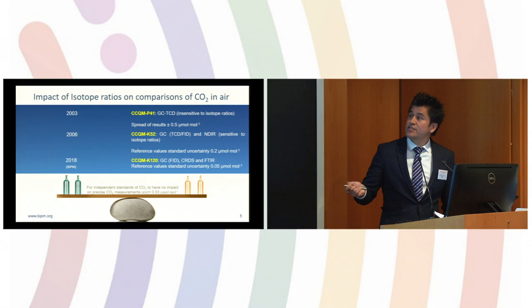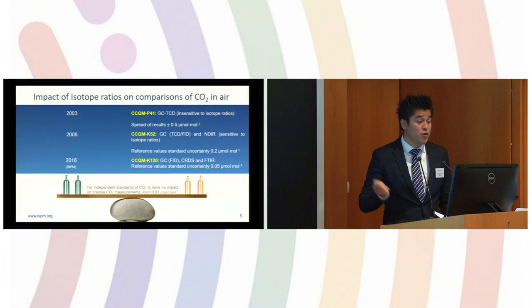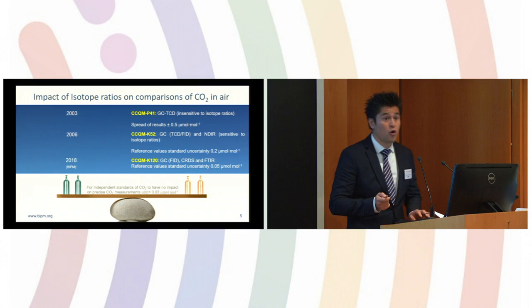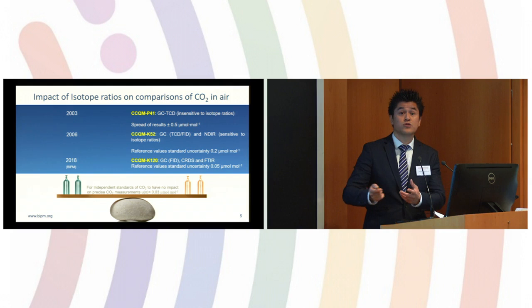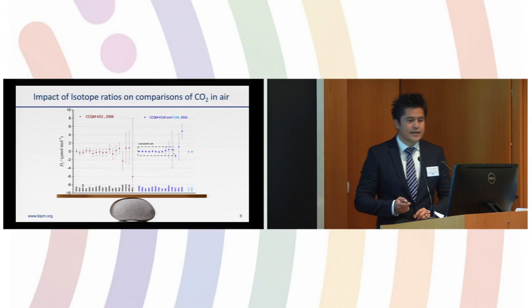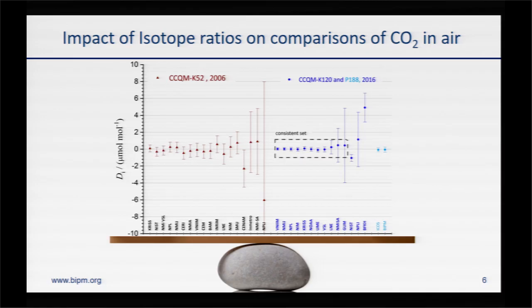This is important to remark because for independent standards of CO2 to have no impact on precise CO2 measurements, we need to have an uncertainty of 0.03 micromole per mole. Then the global networks will only have the contribution of uncertainty of the system itself and not of the standards they are using. We were very happy to be able to demonstrate that CO2 standard uncertainties dropped by a factor of 10.